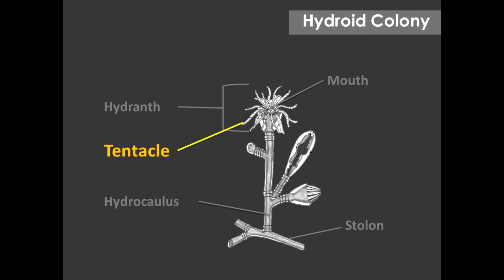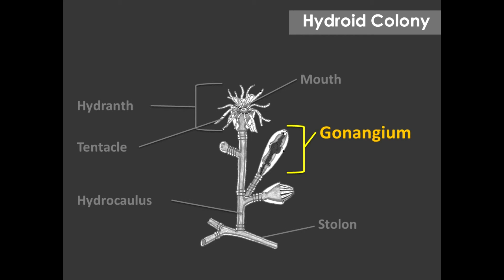The second is called gonozooids or gonangium, which are the reproductive polyps. They reproduce asexually to give rise to numerous lateral buds or medusa buds. These buds develop into a third type of zooid in the colony called medusa.